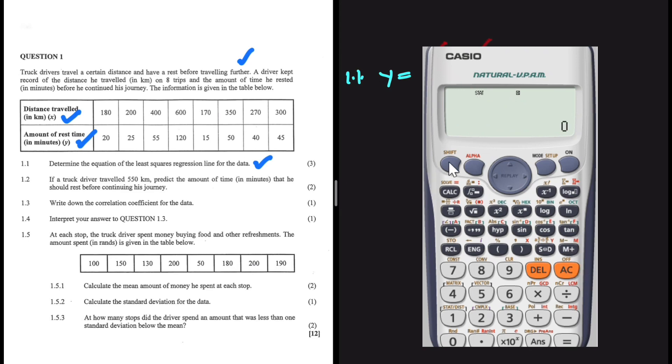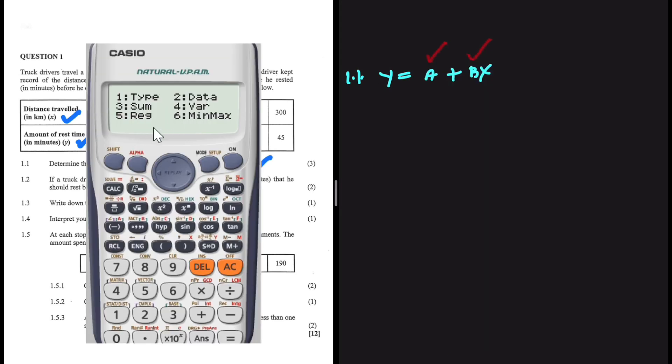After doing that, we have shift one, and then we go to five, regression. It can be option six on a different calculator. It doesn't matter, but we want regression. And then let's go ahead and determine A. A will be equals to, so we have A being equals to. So let me press one, and equals to. If I do that, I get minus 23.85 as the value of A.